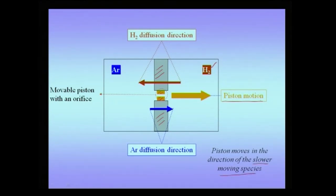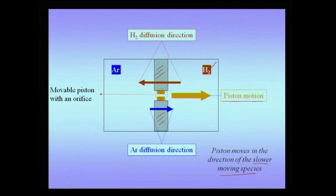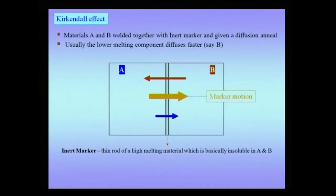You will notice that the volume of the left-hand chamber increases on the motion of the piston. This is an example which can have a solid-state analog, and this solid-state analog leads to an effect called the Kirkendall effect. The analog goes to a chamber with two gases.